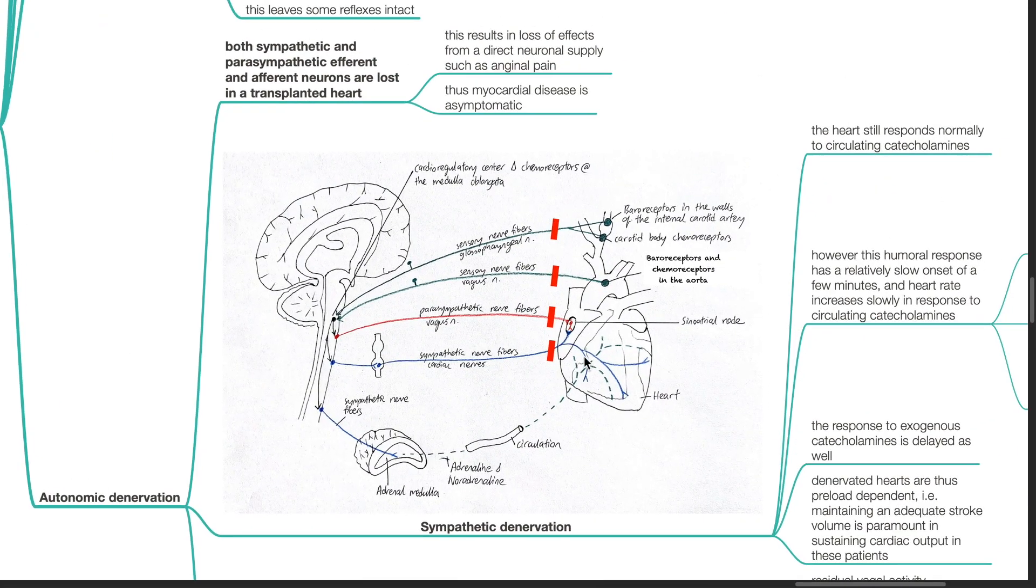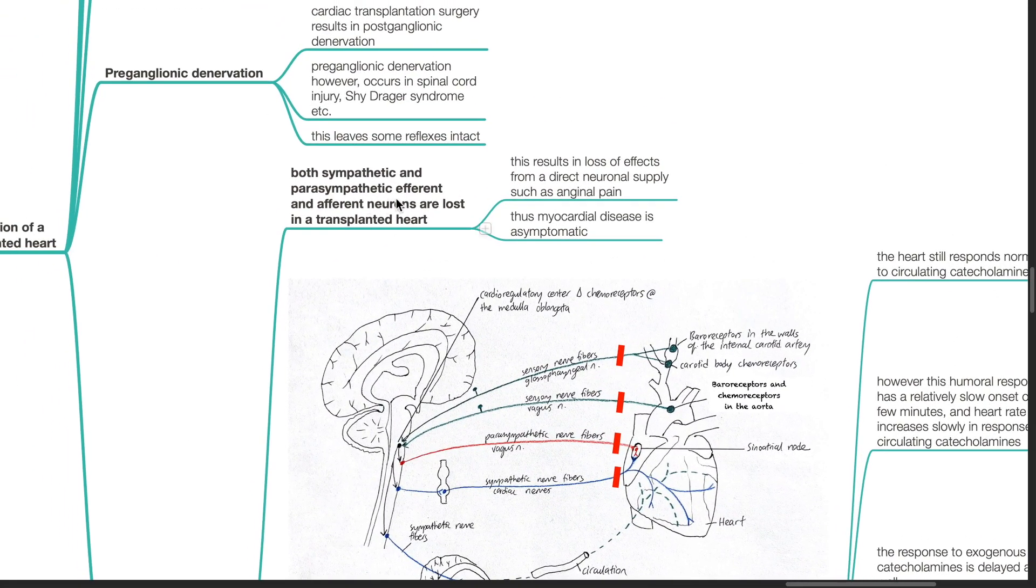Autonomic denervation. Both sympathetic and parasympathetic efferent and afferent neurons are lost in a transplanted heart. This results in loss of effects from direct neuronal supply such as anginal pain. Myocardial disease is thus asymptomatic.